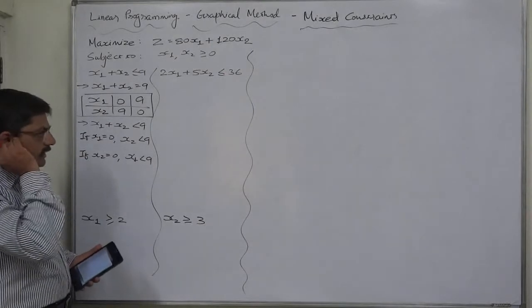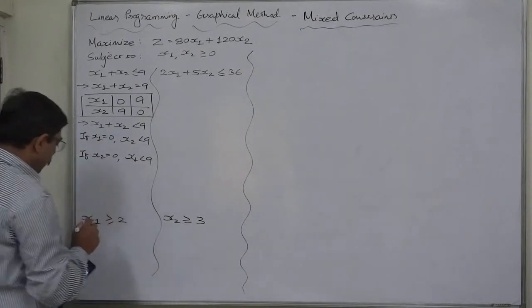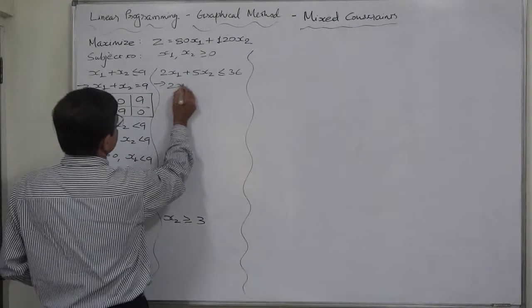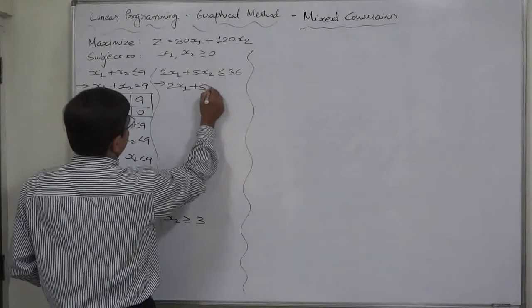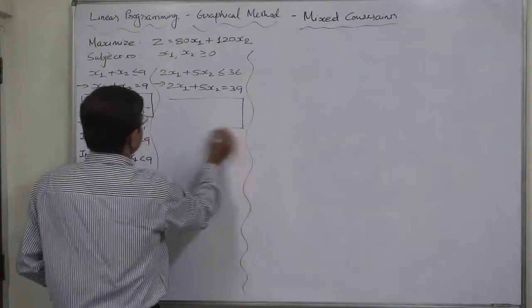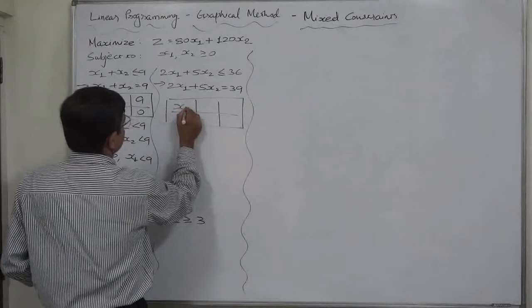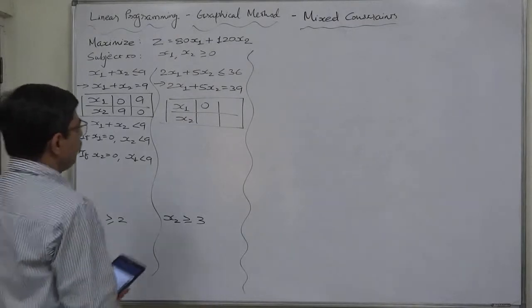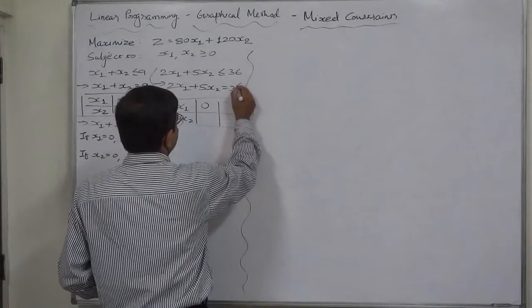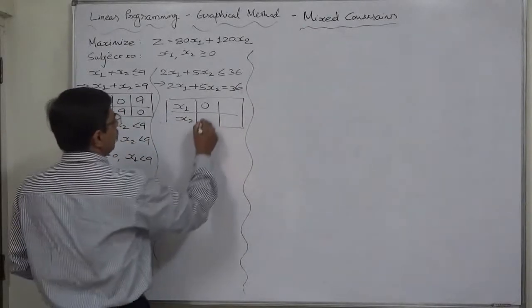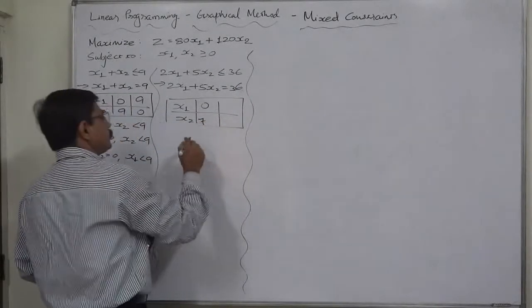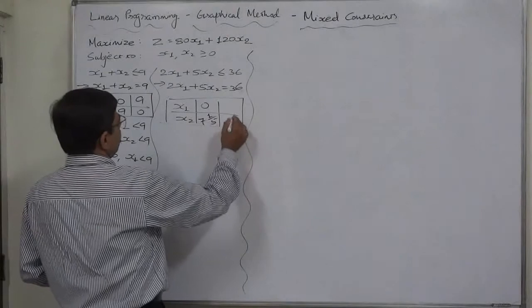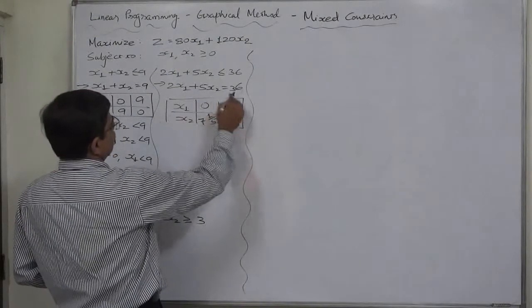Next is 2x1 plus 5x2 less than or equal to 36. Equality, your equation will be 2x1 plus 5x2 equals to 36. Again there will be a fractional value. If x1 takes value 0 then 5x2 equals to 36, that means x2 will take value 7.2, that means 7 and 1 fifth. If x2 takes value 0 then x1 will be 36 divided by 2, 18.